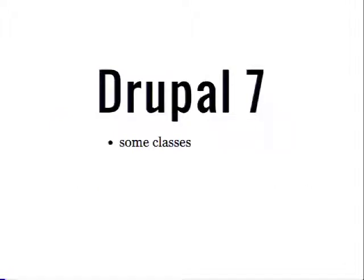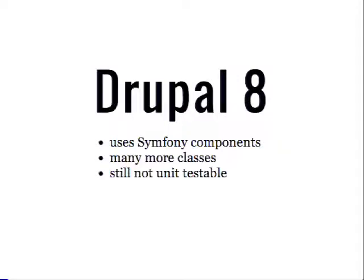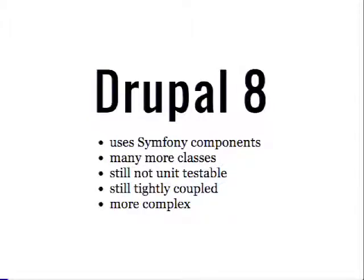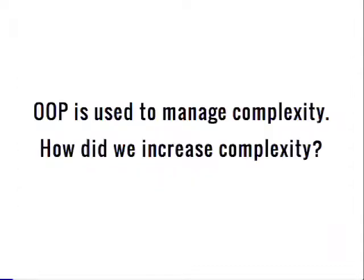Just a quick overview of where we are: in Drupal 7 we had some classes, APIs were pretty much procedural, it was not very unit testable, it was pretty tightly coupled, and it's also very complex. In Drupal 8, we adopted some Symfony components, we have many more classes, but we're actually still not unit testable, we're still tightly coupled, and we're actually somehow more complex. This type of stuff scares me, because existing contributors shouldn't be as scared of D8 as they appear to be.